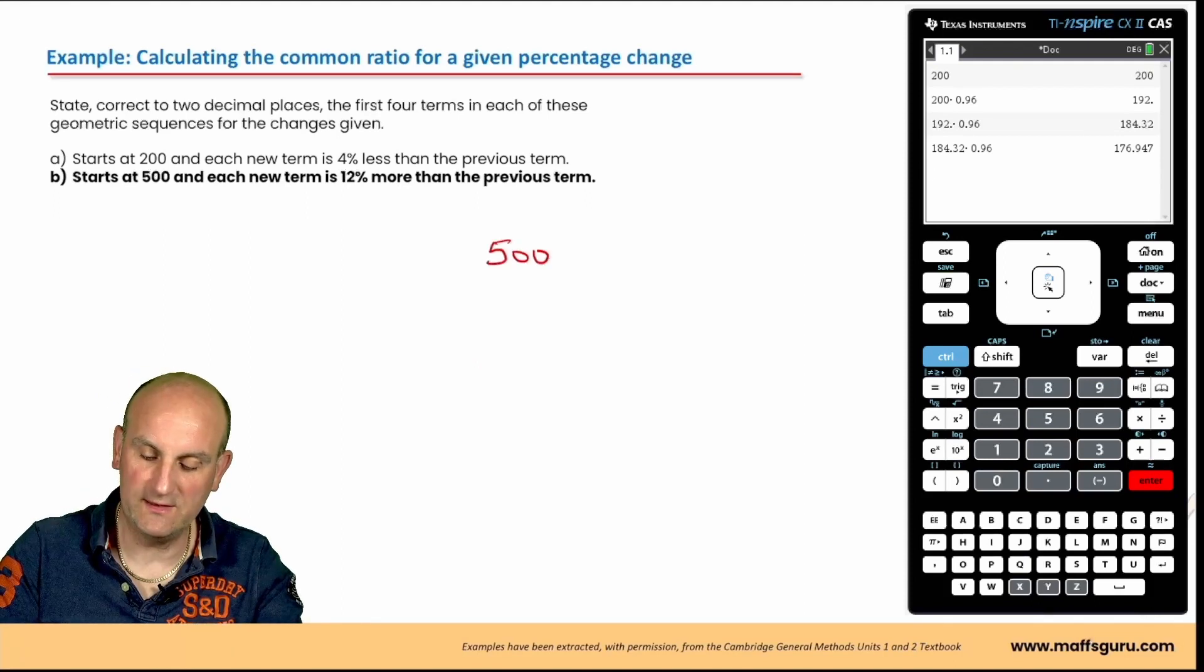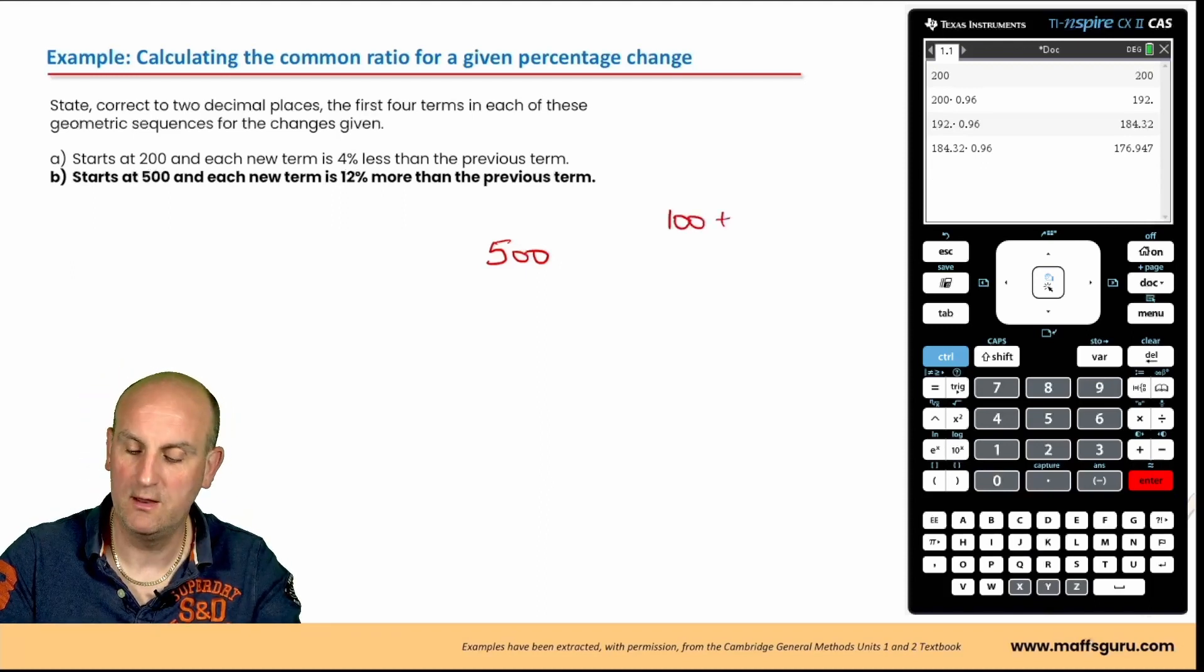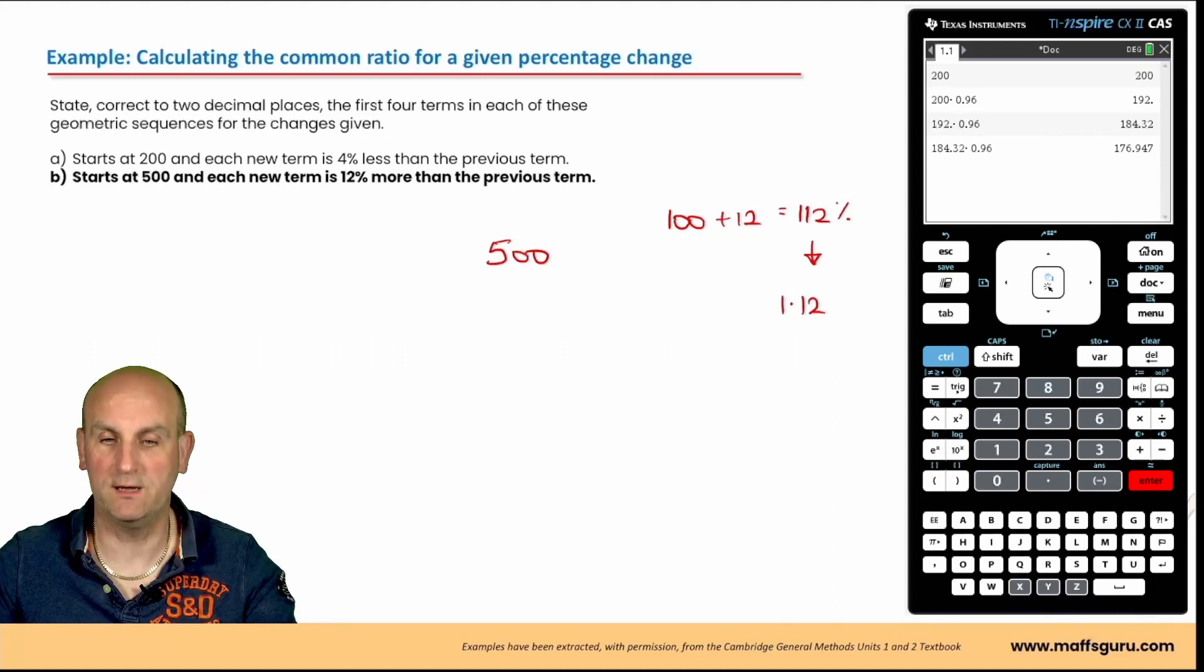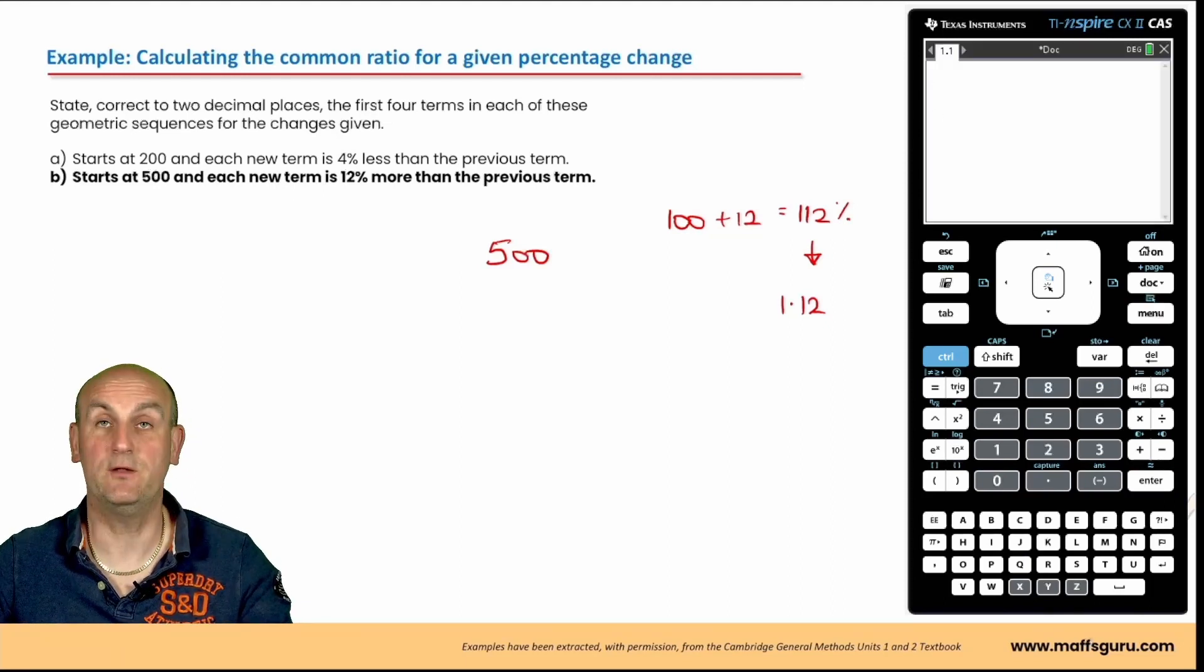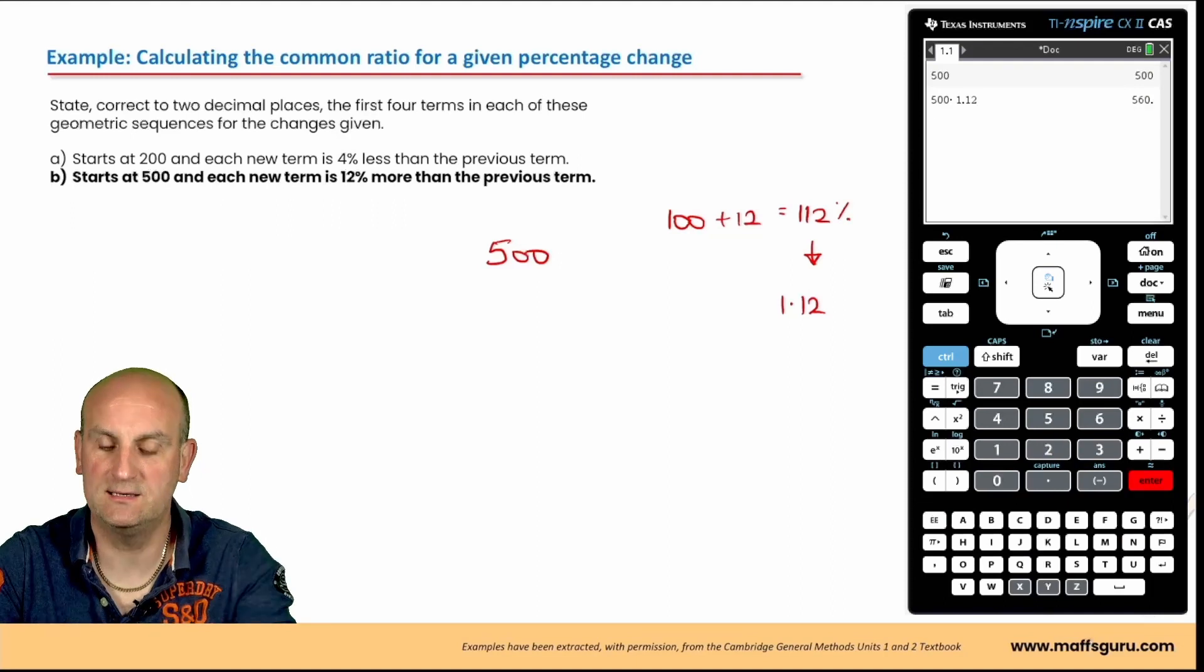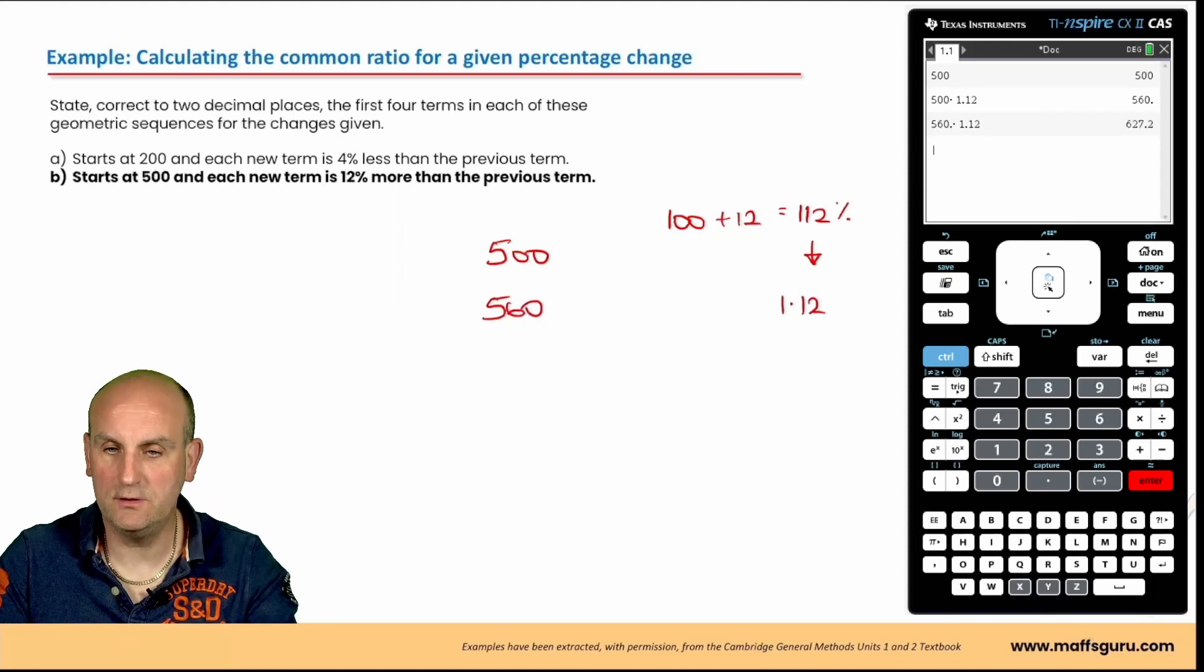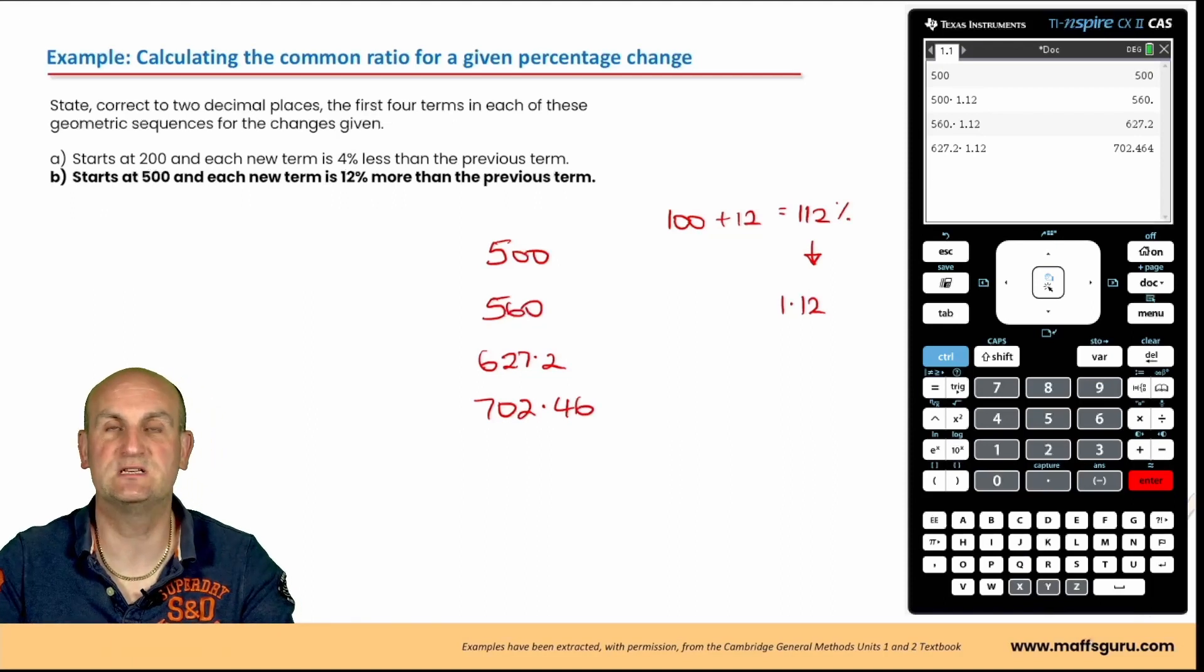Starts at 500. All right, so we've got 500 this time, and it is 12% more than. It's going up. So I've got 12, started with 100, I'm adding on 12. It gives me 112%. I want to divide that by 100 to give me a multiplier of 1.12. So what am I going to do now? I'm going to go menu, actions, let's clear my history, and let's start again. So first term, 500. Hit enter. Answer times 1.12. Hit enter, 560. Hit enter again, 627.2. And the last one, 702.46 to two decimal places.